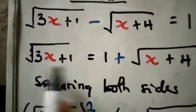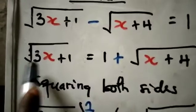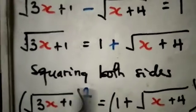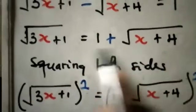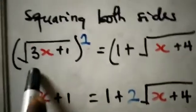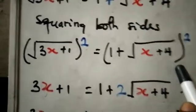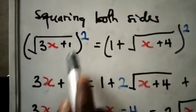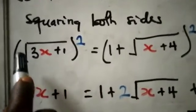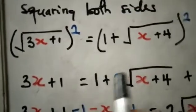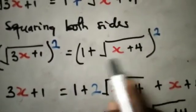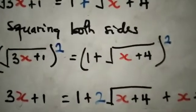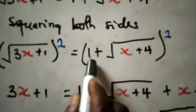To take x out of the radical, we square both sides of the equation. Squaring the left side: [√(3x+1)]² = 3x+1. The square root is eliminated. On the right side we square [1 + √(x+4)]², using the (a+b)² expansion pattern.